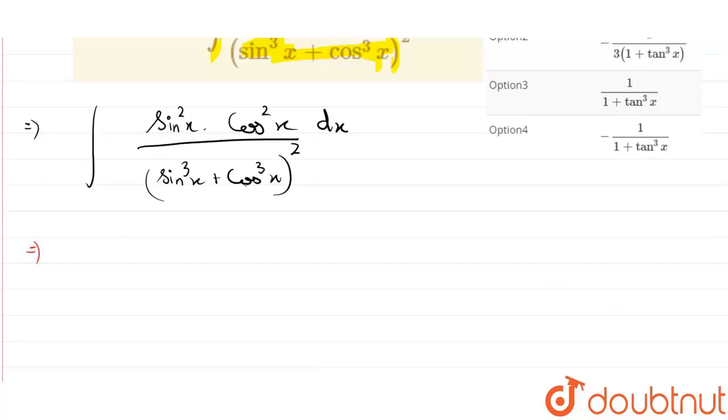By taking cos³x out of this bracket, we get sin²x·cos²x divided by cos⁶x multiplied by (tan³x + 1)².